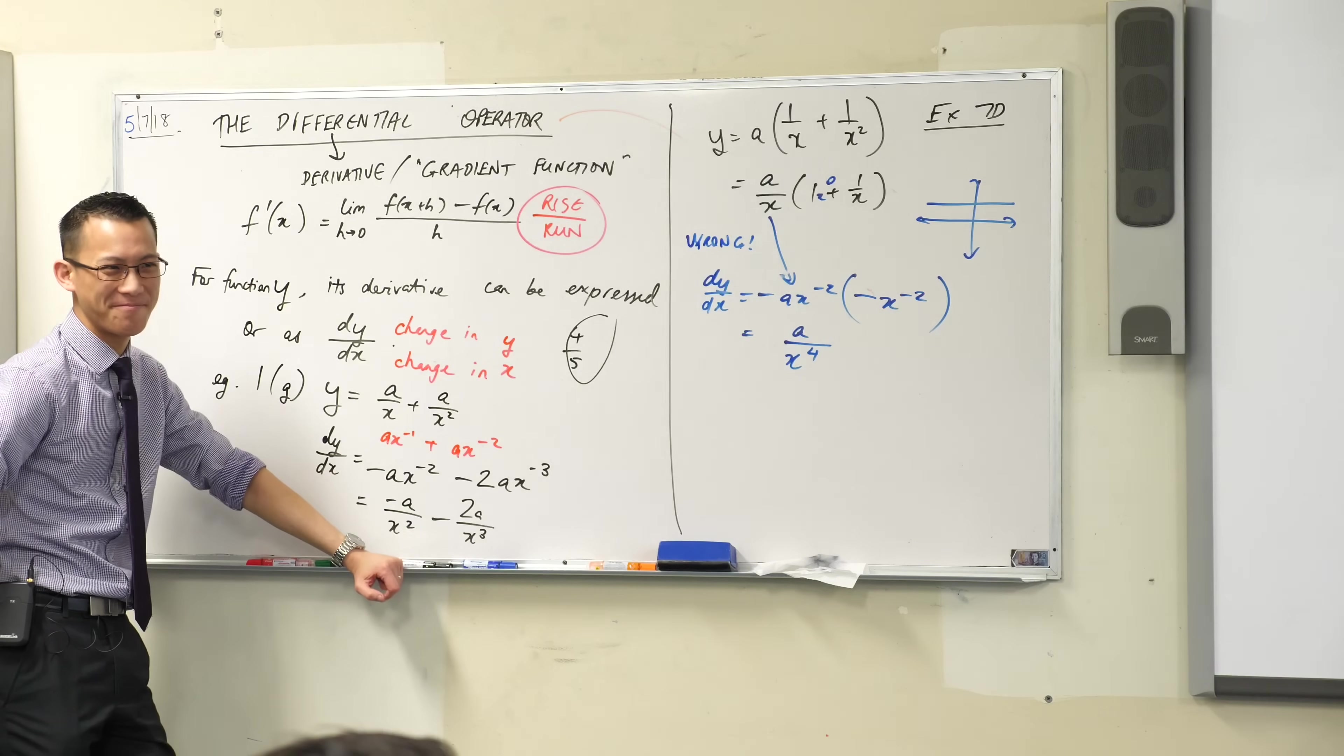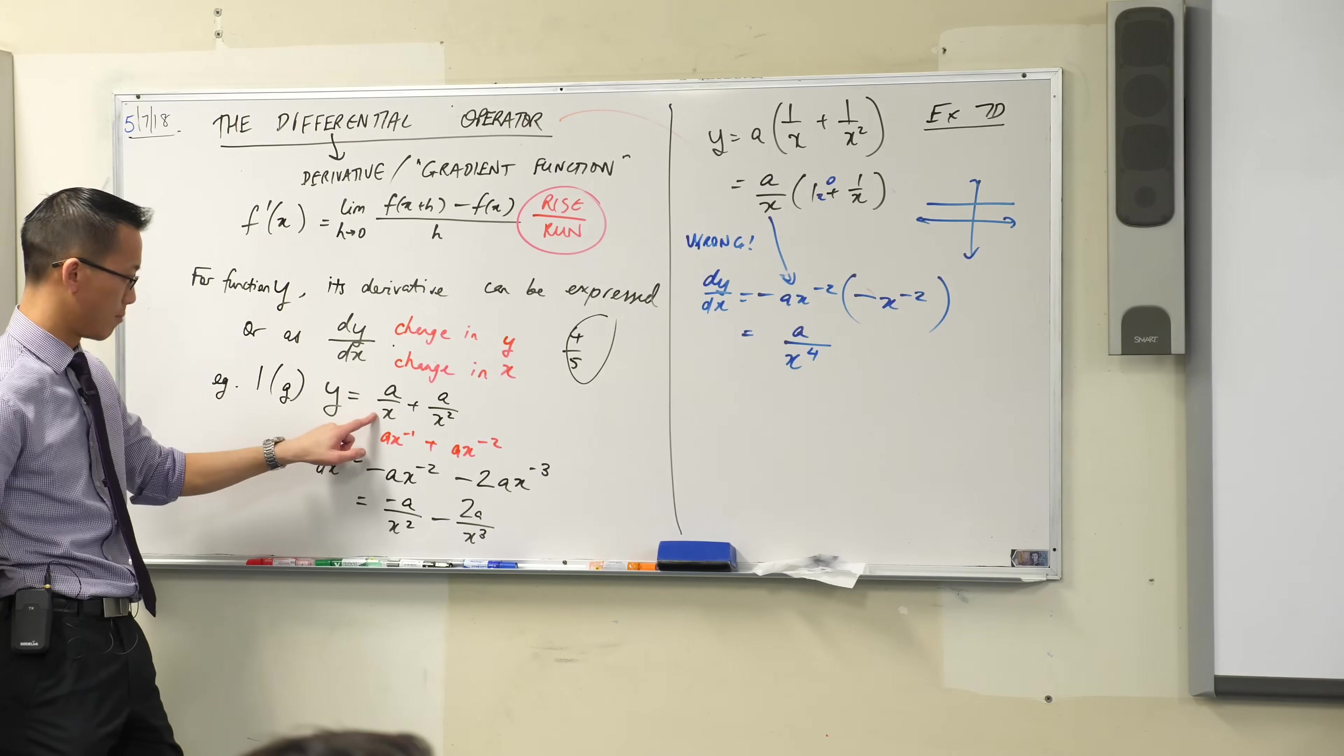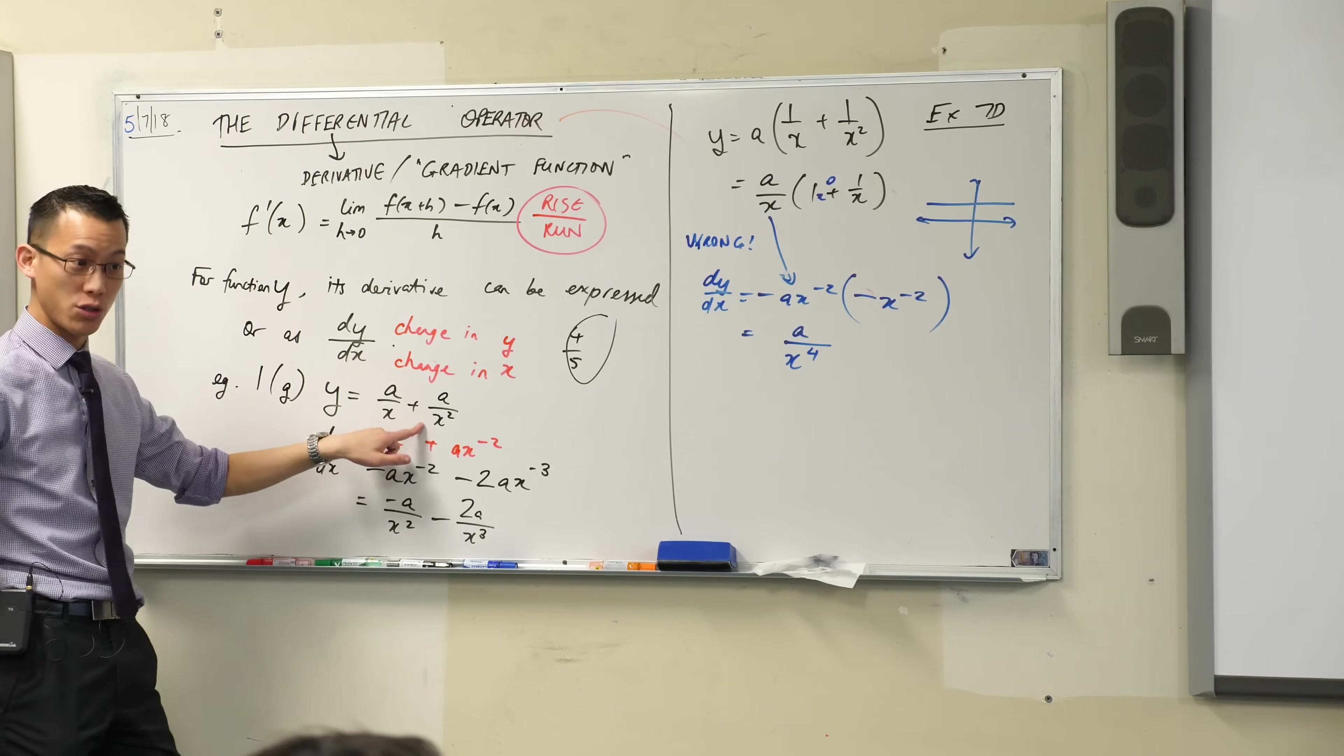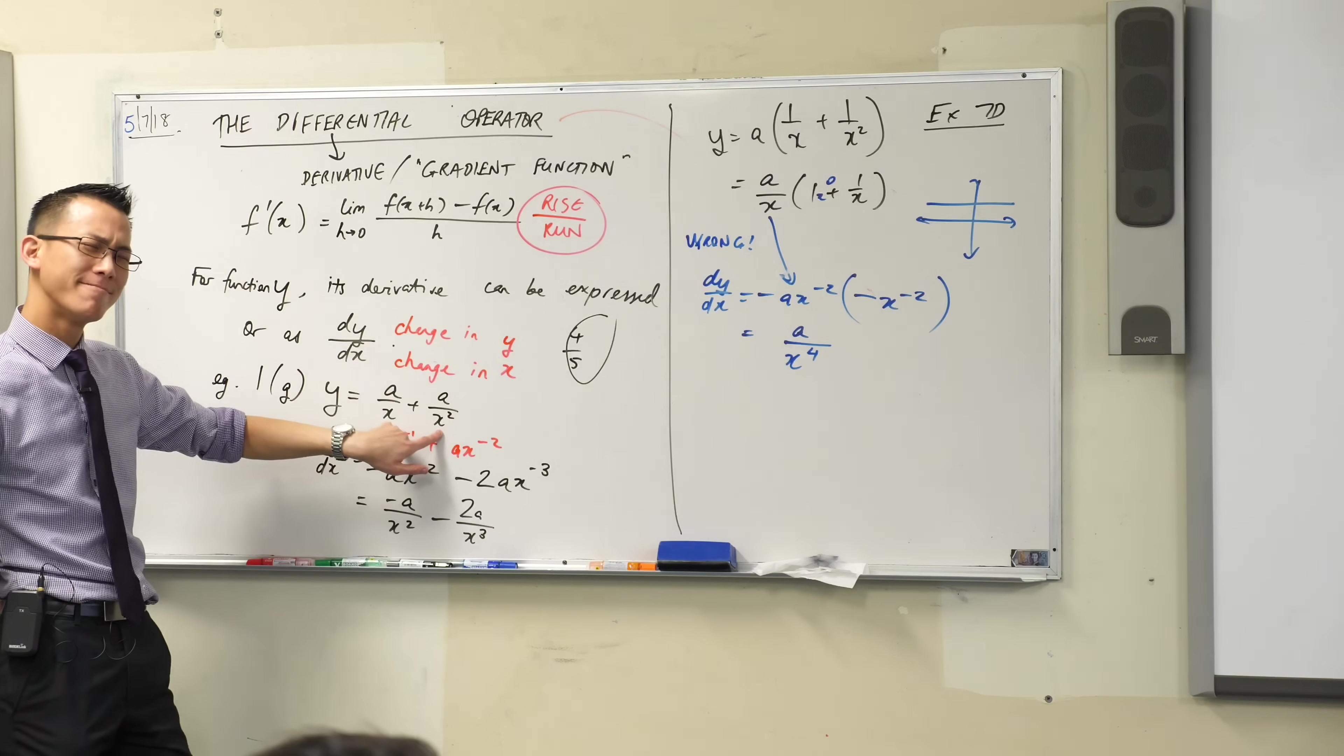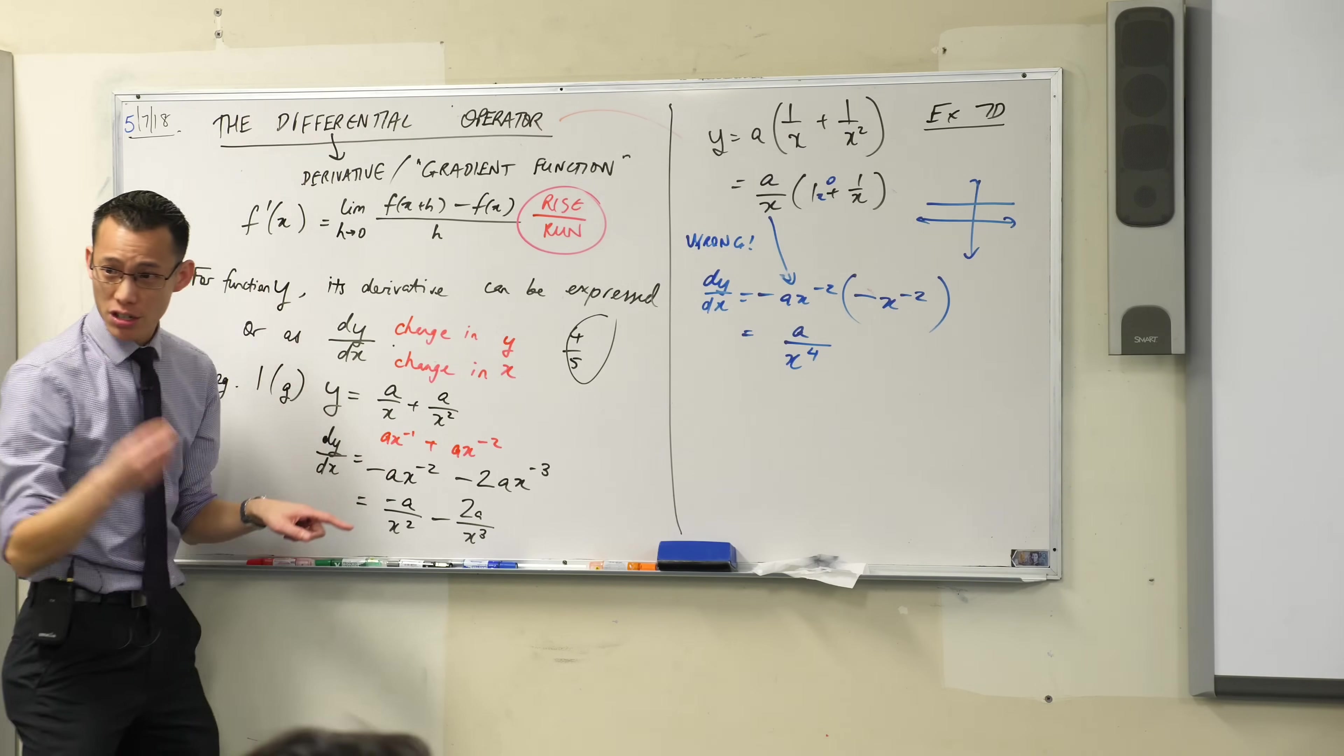Because it's, since if you can think of a over x as one function and then a over x squared as another function. Yes. So maybe if you factorize it, you're sort of like muddling with that. That's really good intuition, Jazz. So what's going on here, right? We know, have you been taught this little sort of mnemonic device?